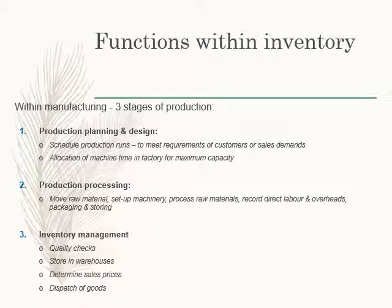The second phase is the production processing phase. Within this phase, you are issuing raw materials to the production process, there is movement of goods through the production process, and at the end there is a transfer of the manufactured goods to your finished goods. The third phase within the inventory cycle is inventory management, where we look at the receipt and recording of manufactured or purchased goods, the storage of inventory, and the maintenance of inventory records.